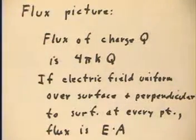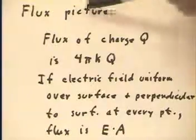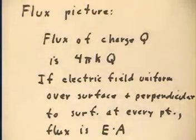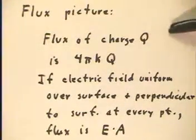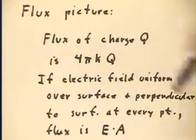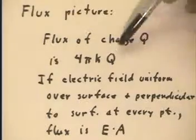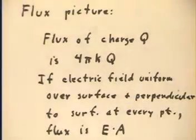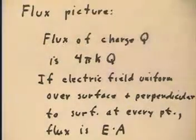More specifically, if a surface, any surface at all, spherical or otherwise, encloses a charge Q, then the net electrostatic flux through the surface has to be 4πkQ. Q is the total charge enclosed by the surface. This is the flux through the surface.